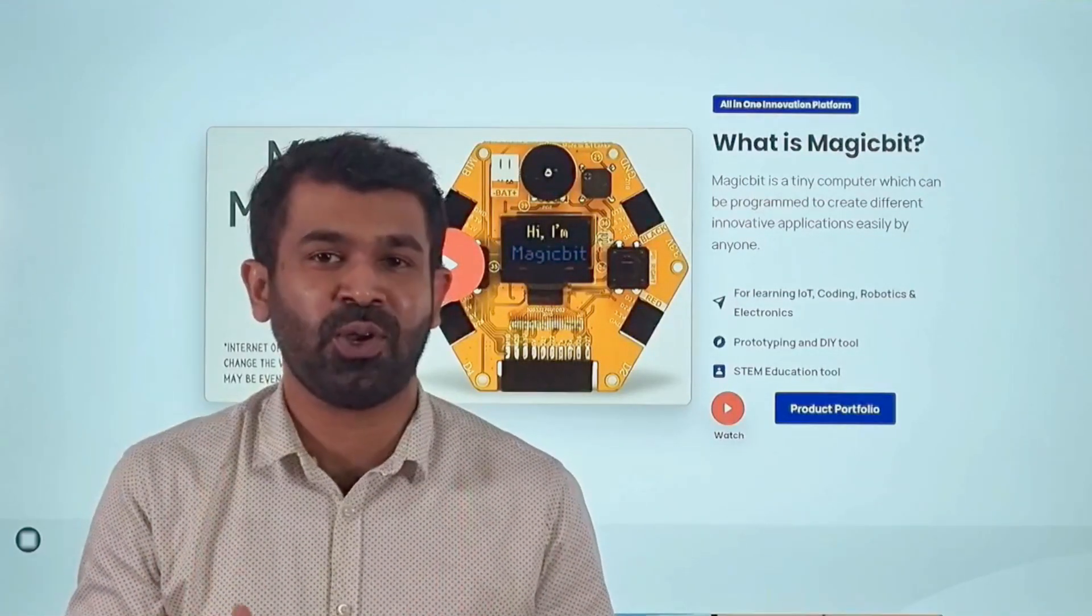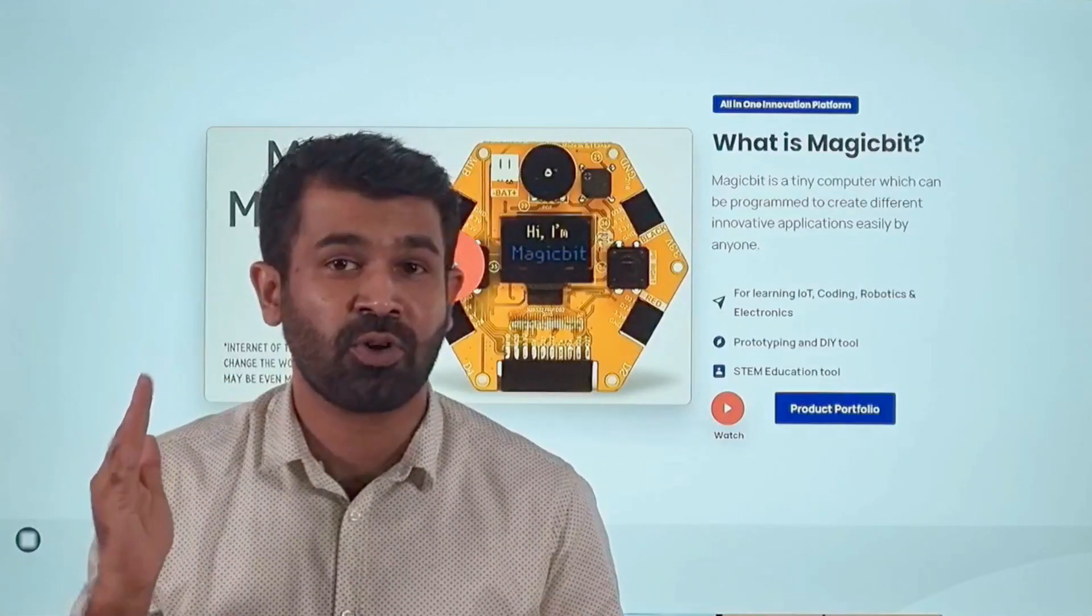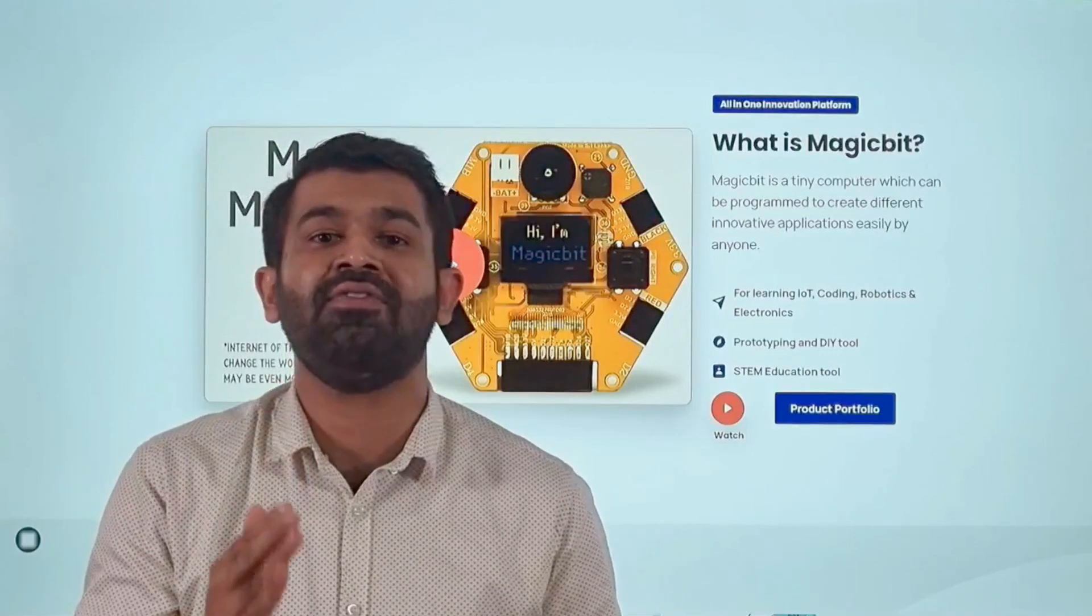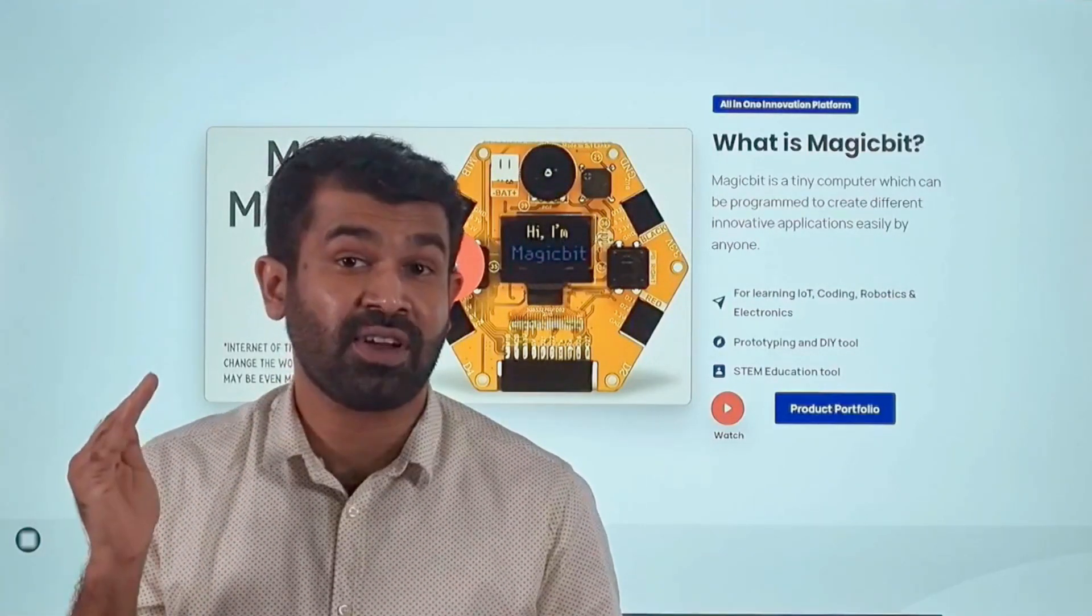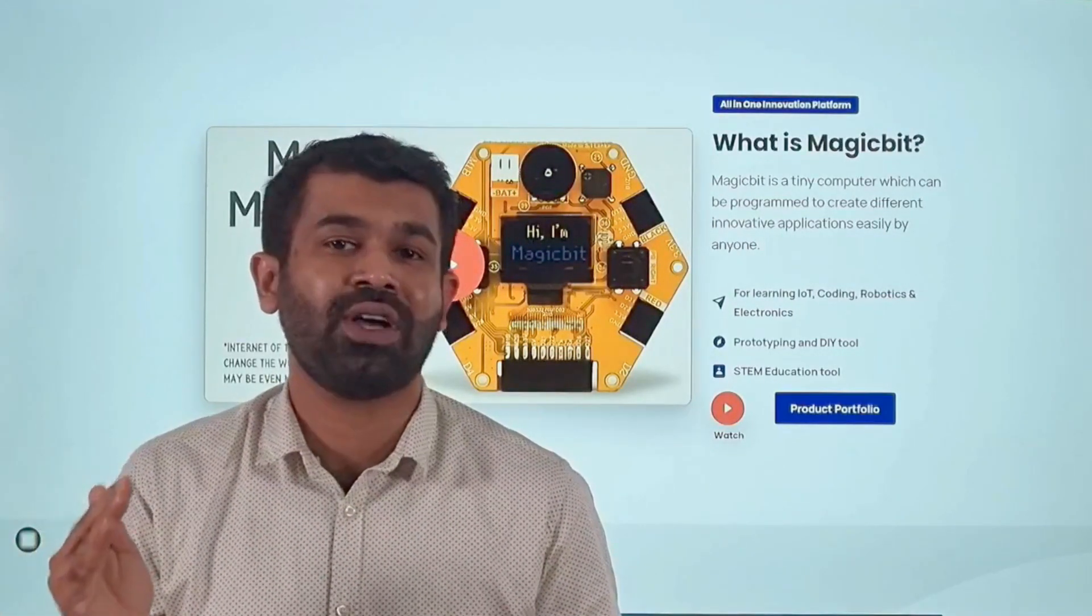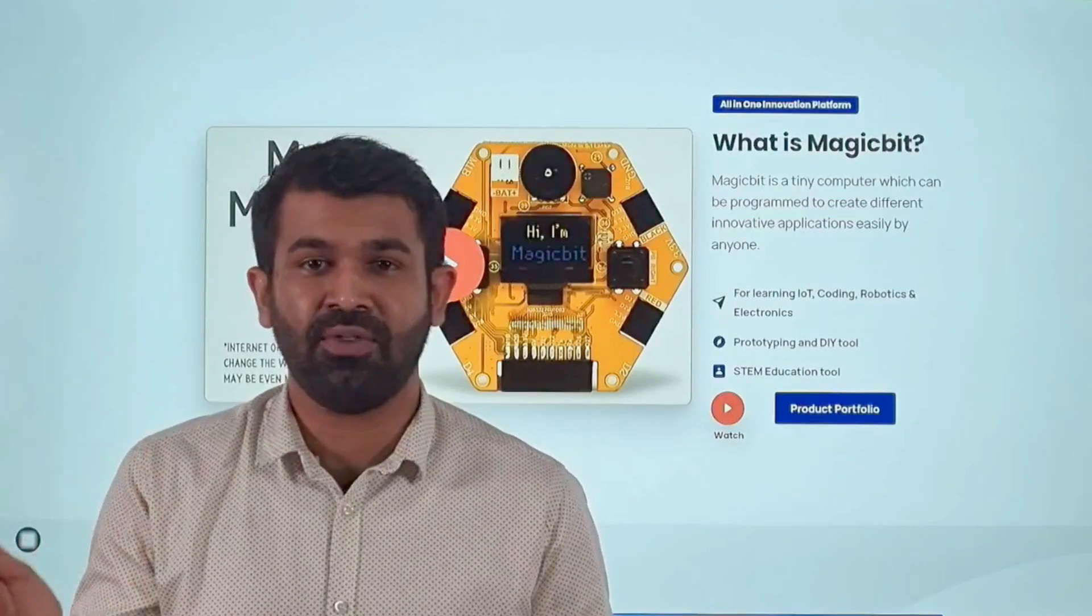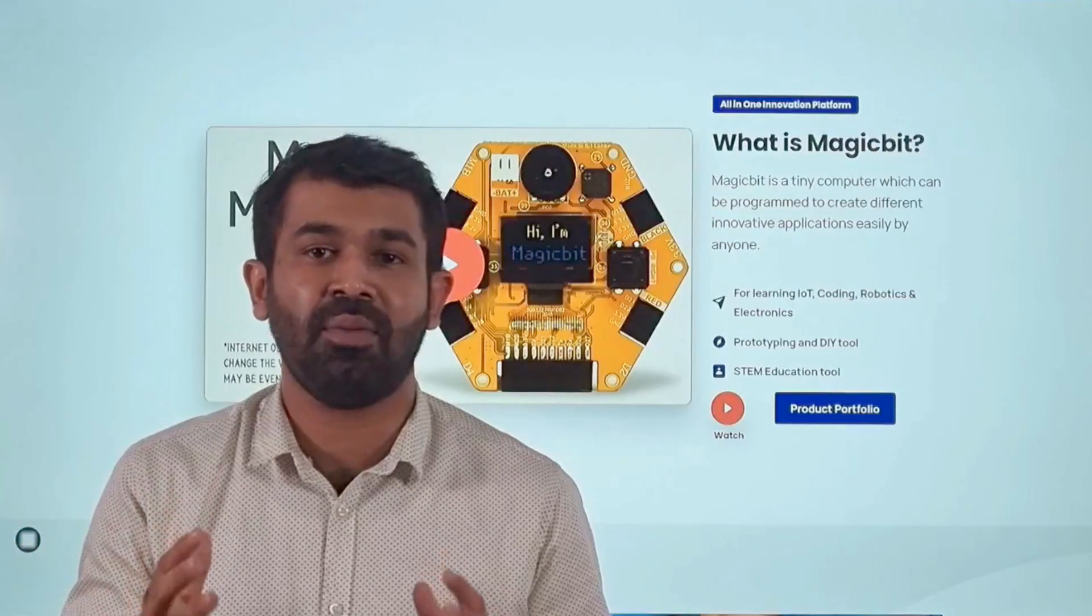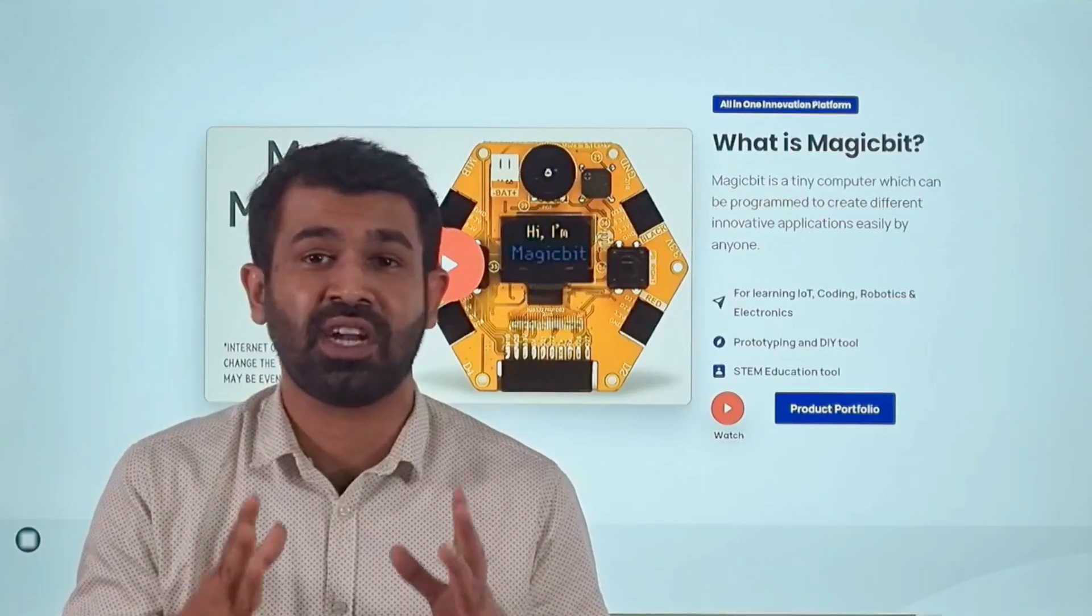So that is what we are going to do starting from the month of October. If you have already pledged to our project, your money will be deducted from the card after our campaign ends on August 30th, and afterwards from October onwards we will be shipping our Magic bit products to you.